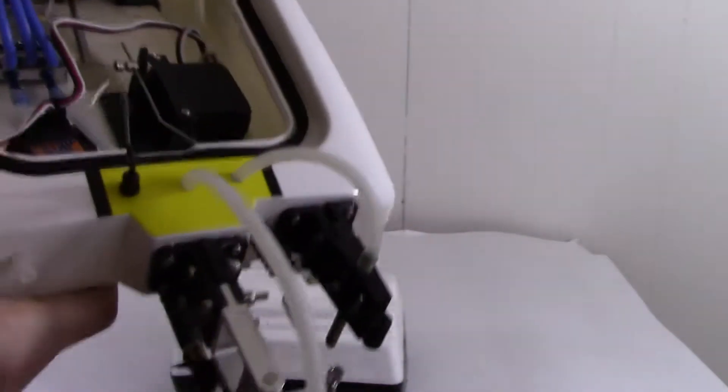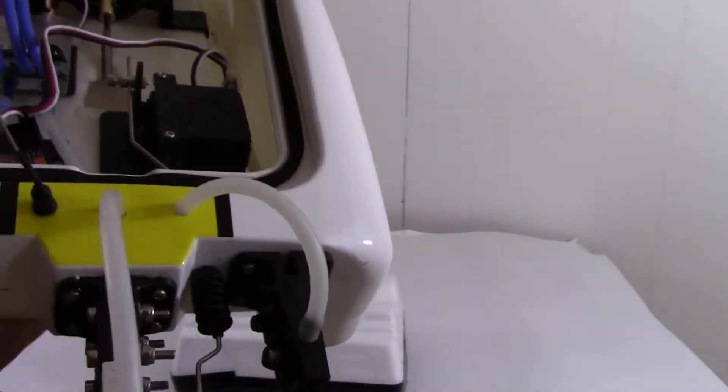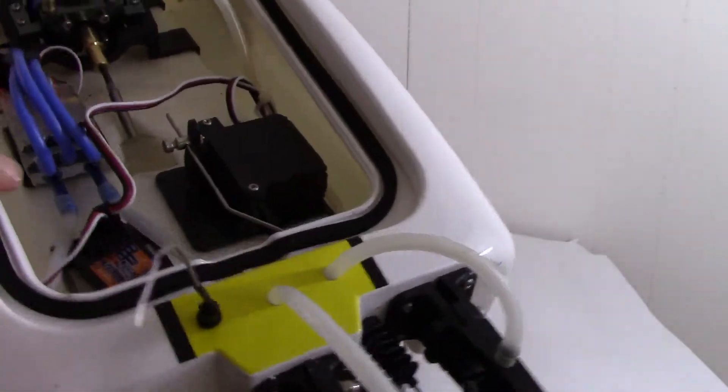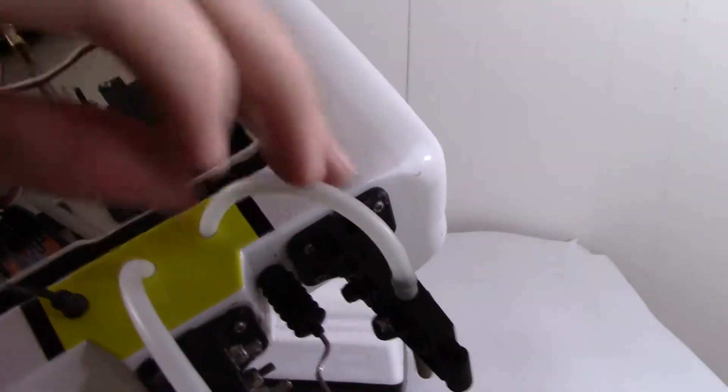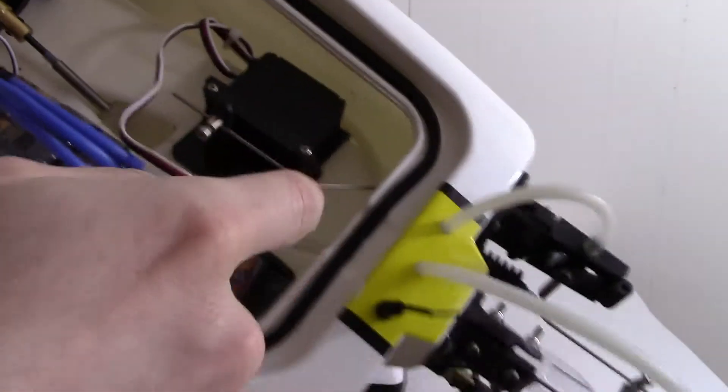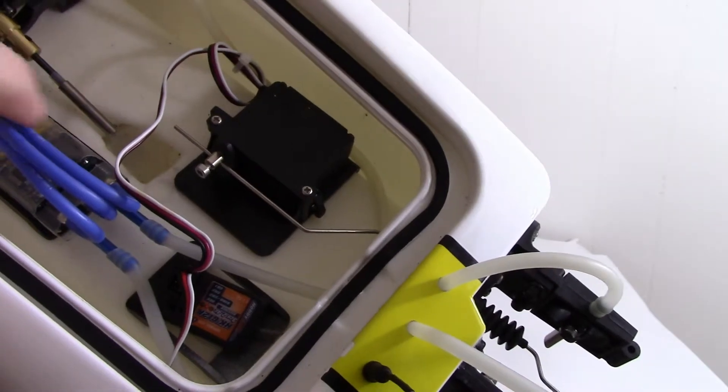I also added a second water pickup so I can have the speed controller cooled separately. The speed controller is cooled through this inlet tube. It just goes into the speed controller and then straight right back out the back of the boat.